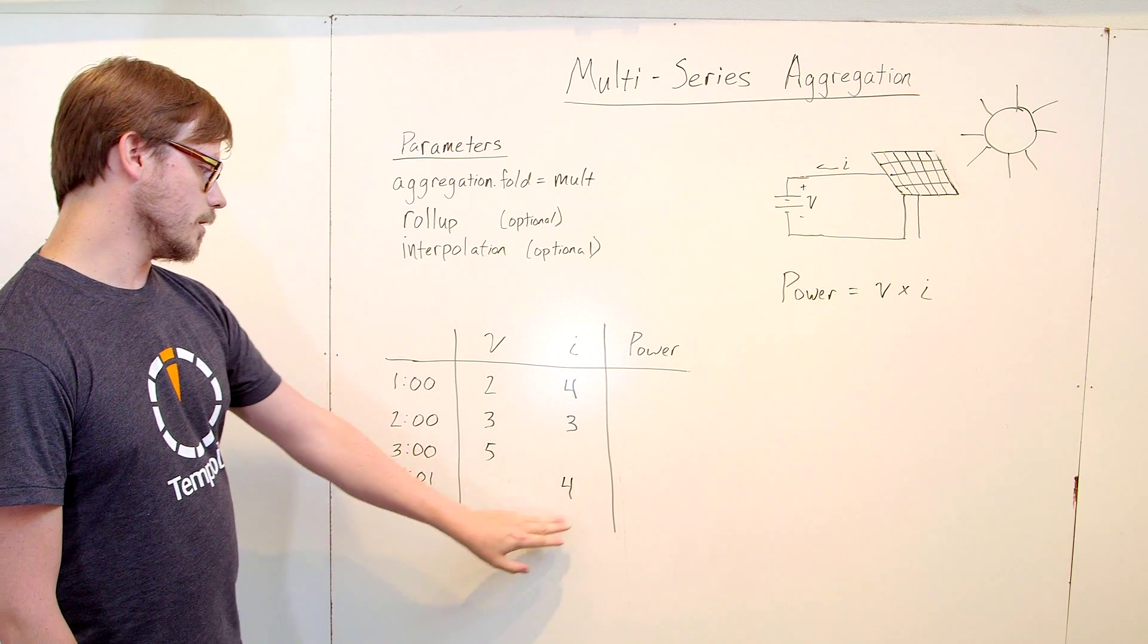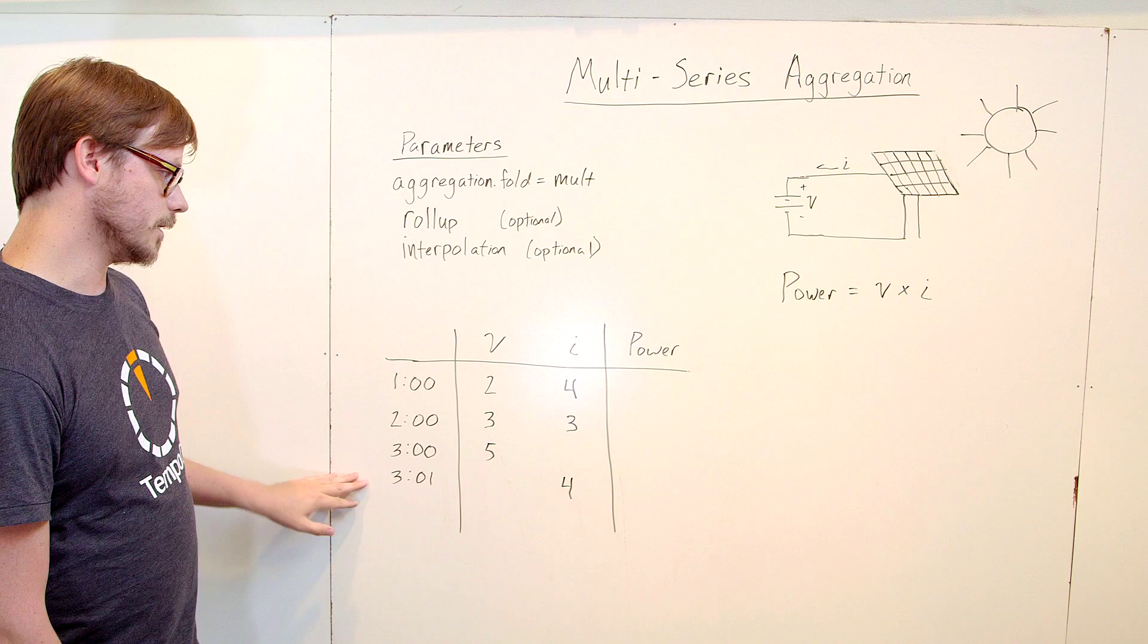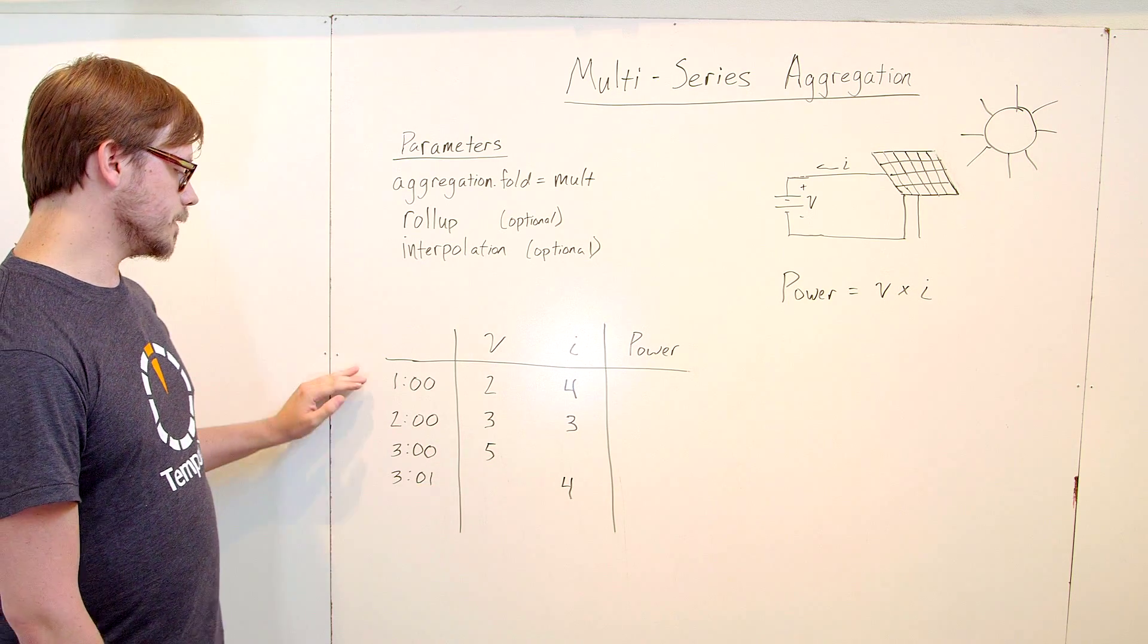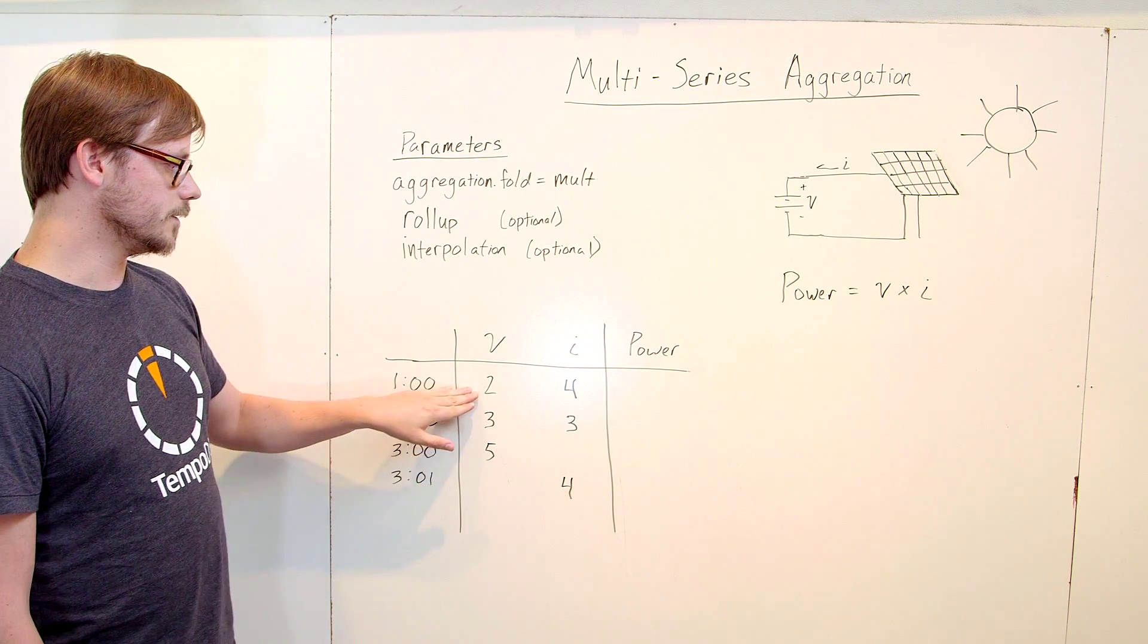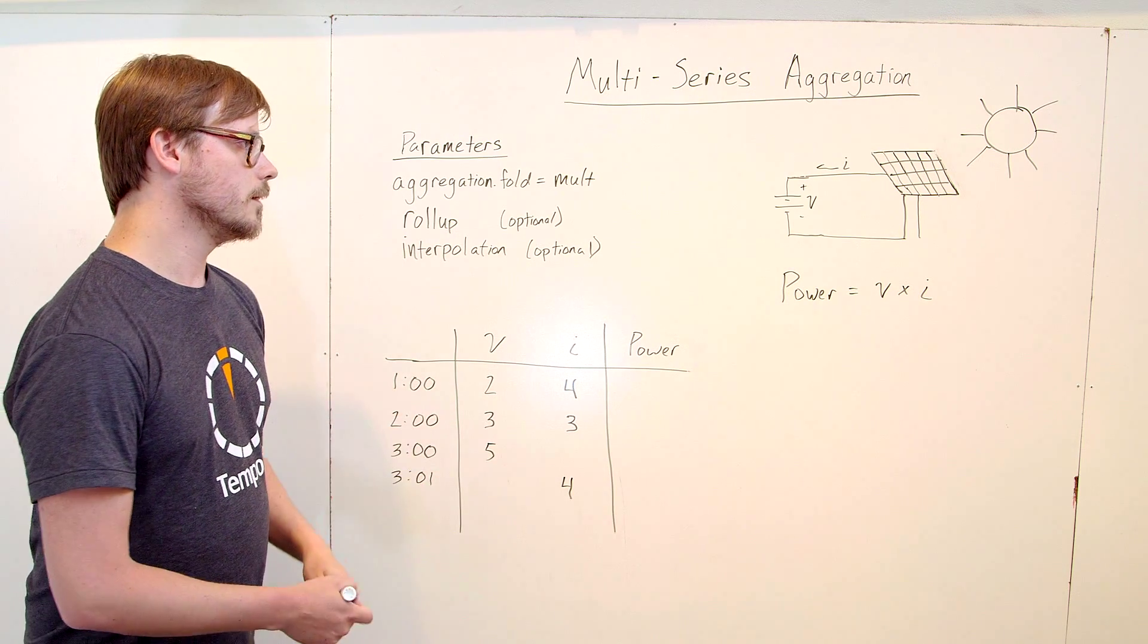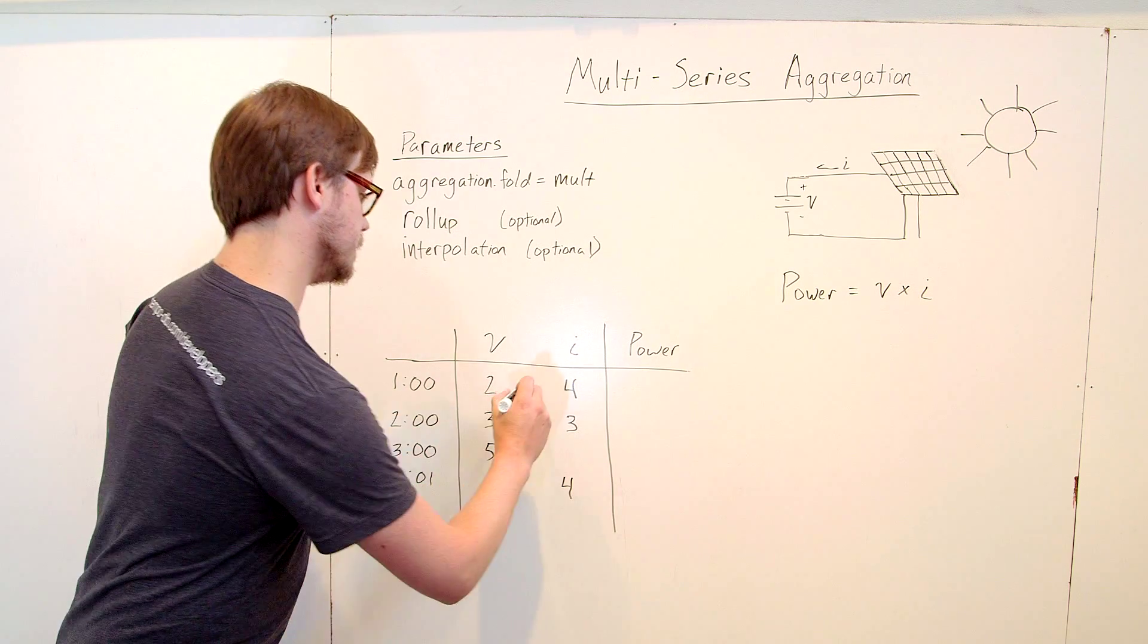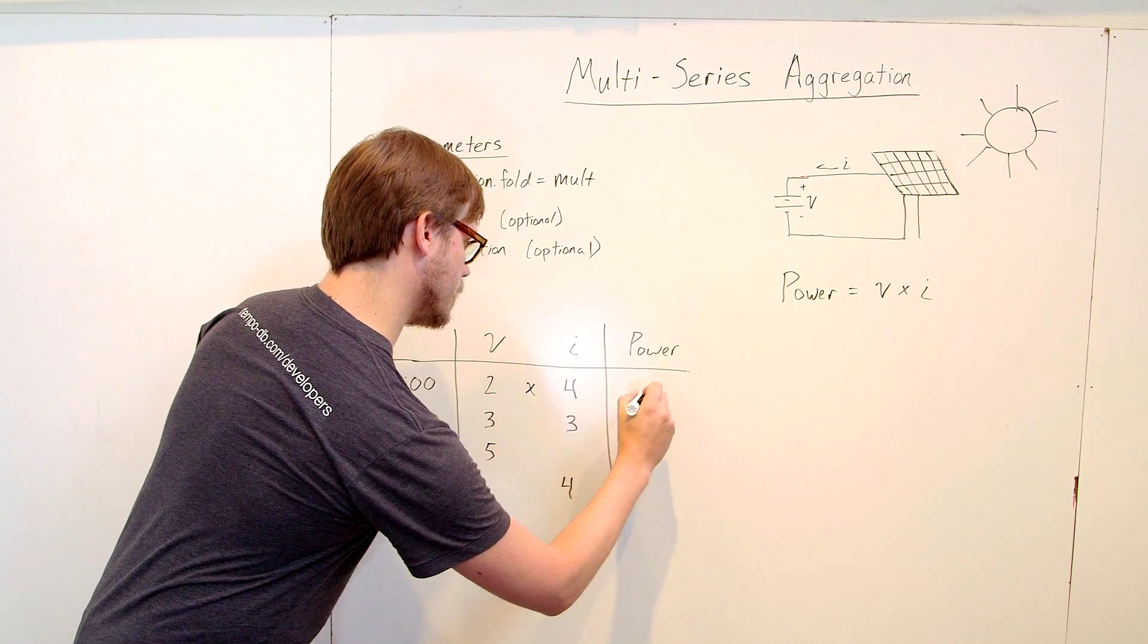We've got two series, the voltage and the current, measured at multiple timestamps. So for the first, at one o'clock, we've got a voltage of two and a current of four. So the aggregation will multiply these values together to give you a power of eight.